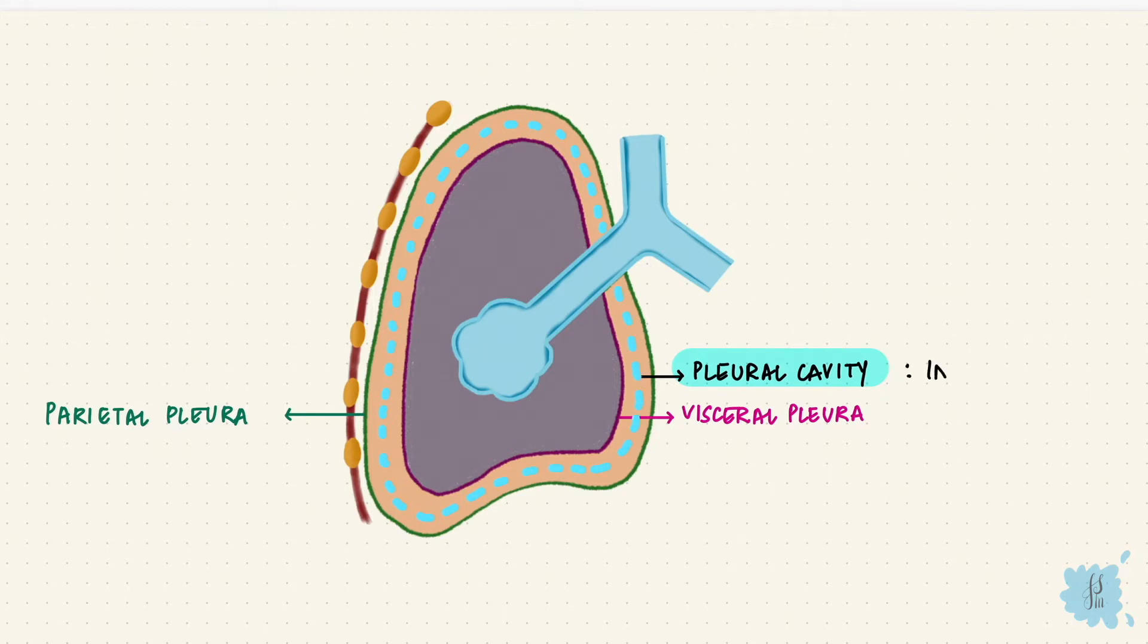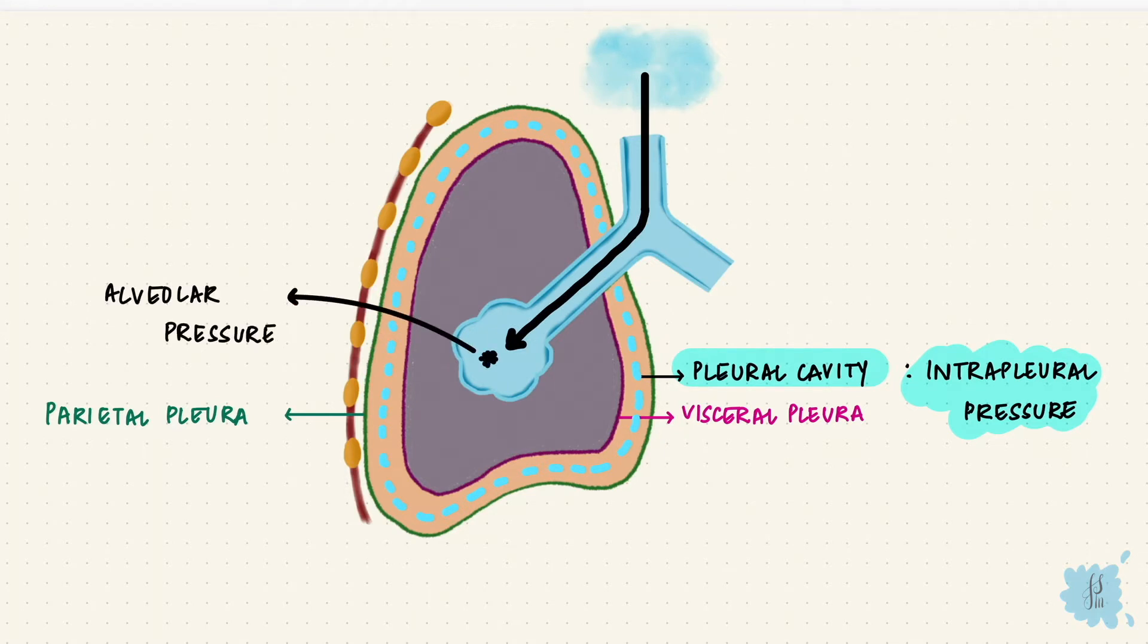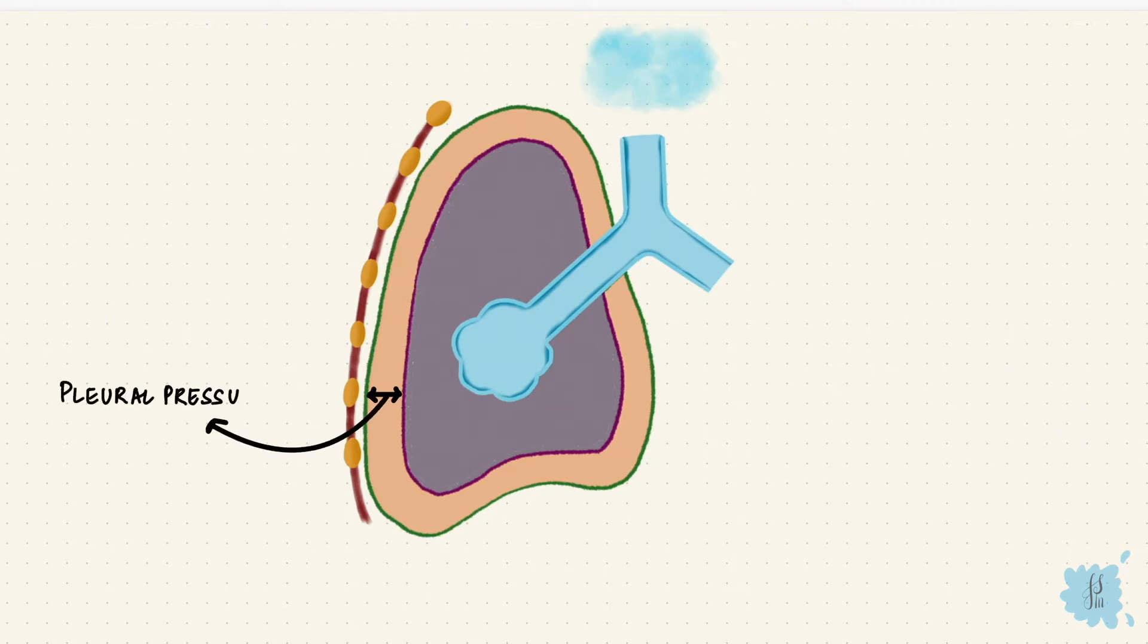The pressure in the pleural space, that's the intrapleural pressure or just simply pleural pressure. Now the air is going to enter through the airways into the alveoli. The pressure in the alveoli is the alveolar pressure. So we've got the pleural pressure and the alveolar pressure.